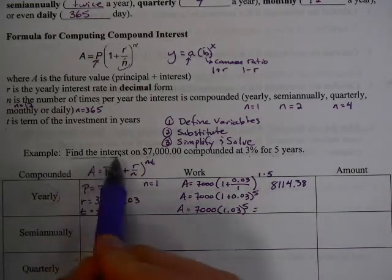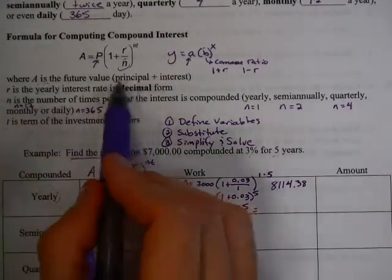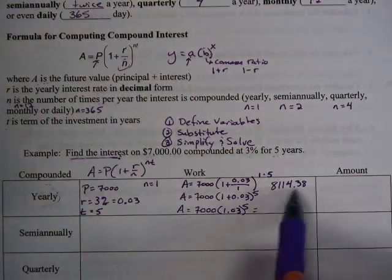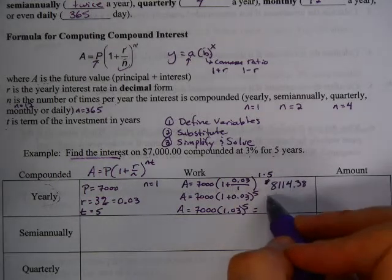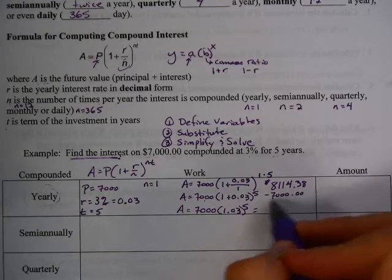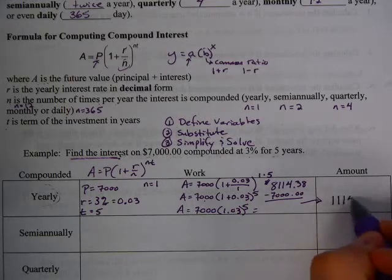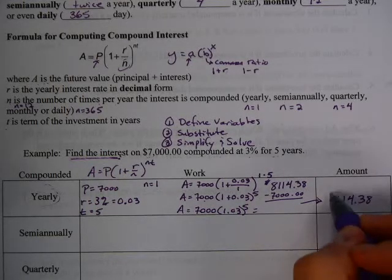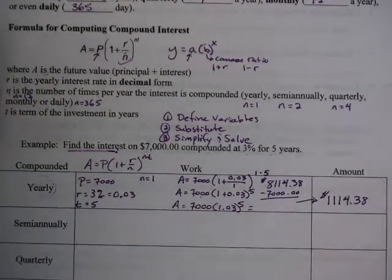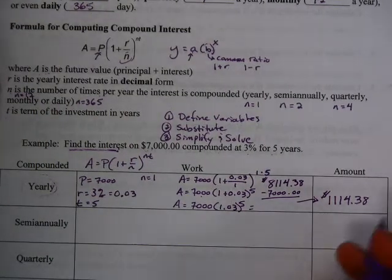But here's the more important part. This question asks us to find the interest. If you remember, A is going to be the principal and the interest. So you have to subtract that principal amount from your 8,114. So the principal was 7,000. So we're going to subtract 7,000 from this amount. And that leaves you with your interest amount, which is 1,114.38 cents. Now, I hope that's right. I don't have my calculator on me, and I did this ahead of time.